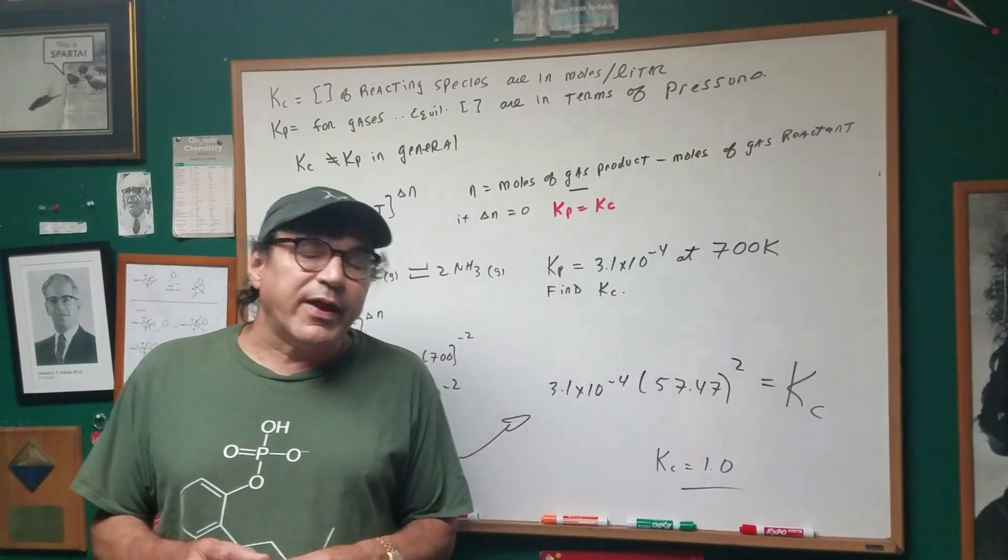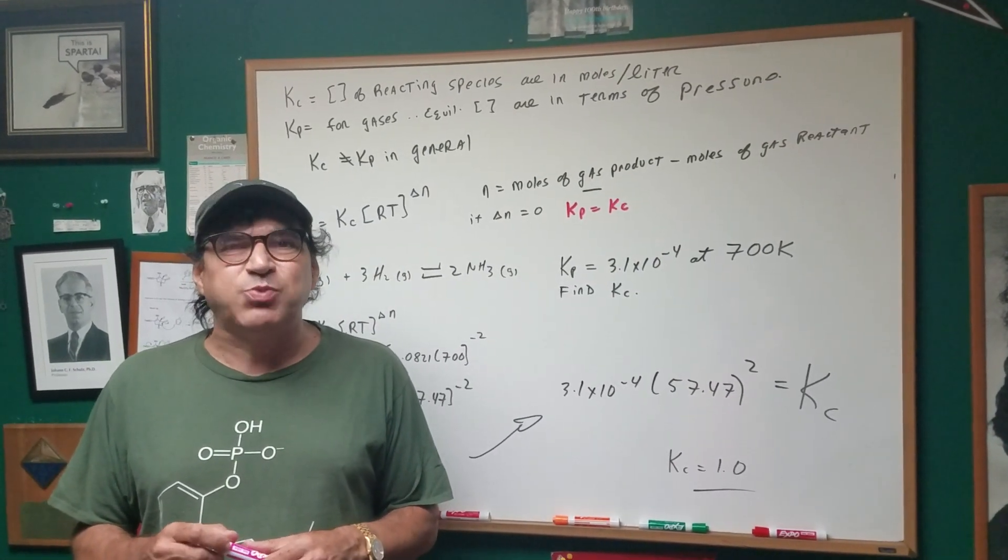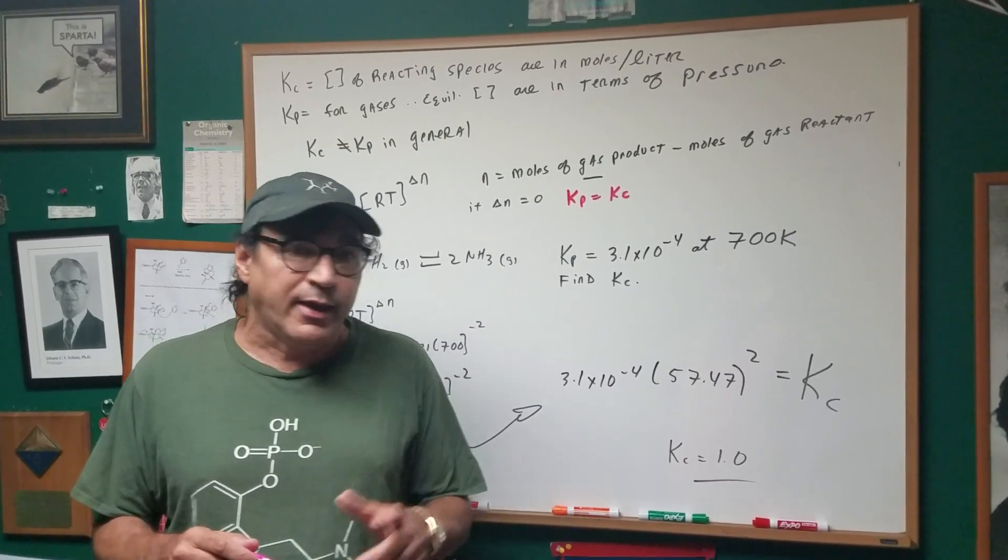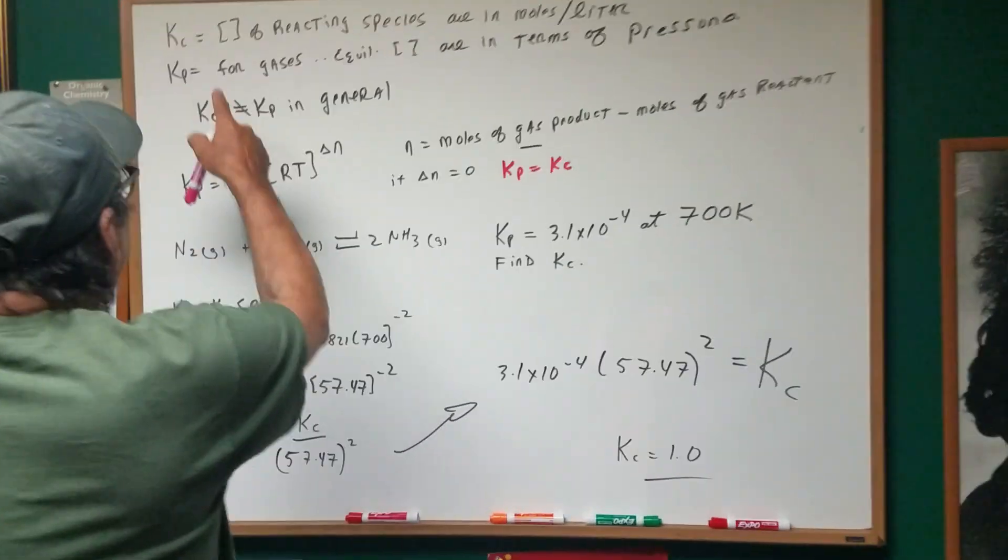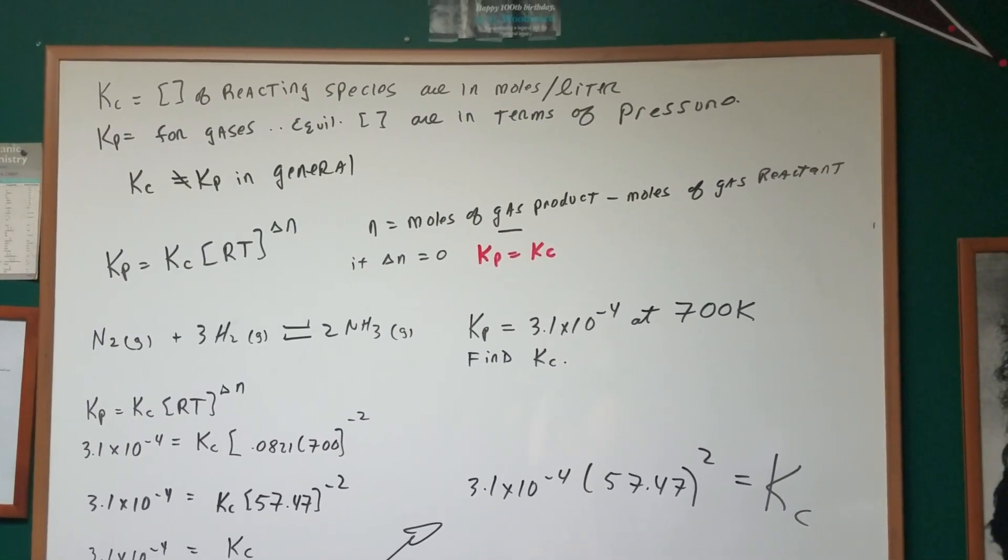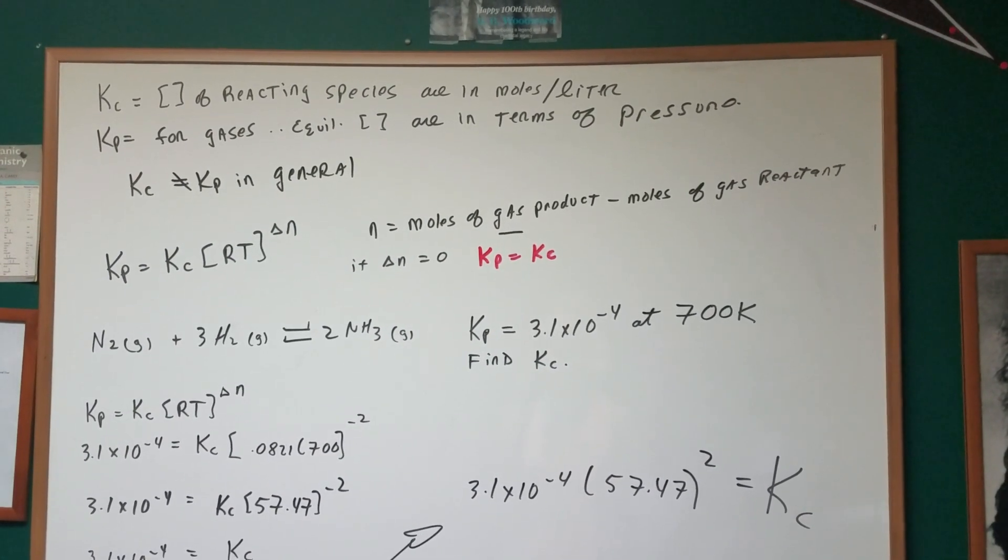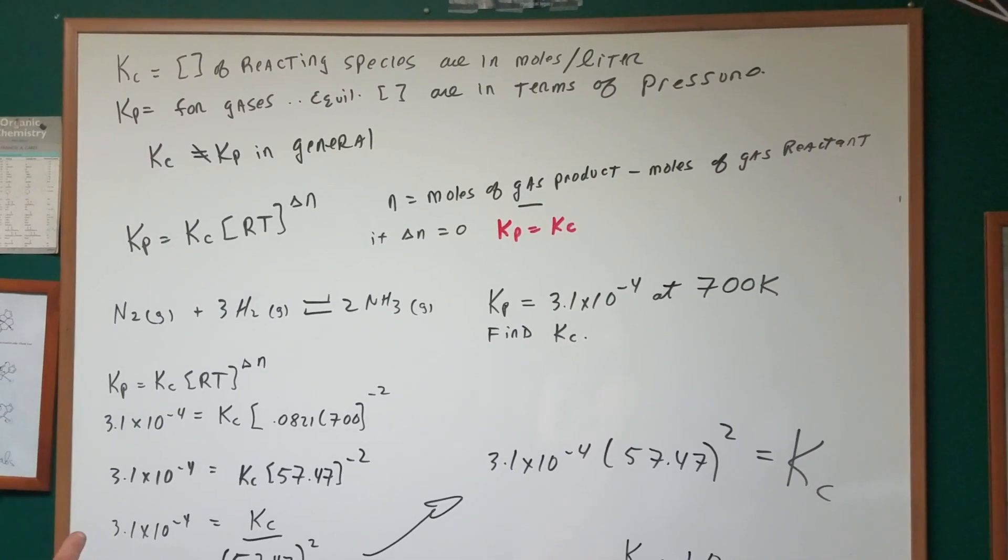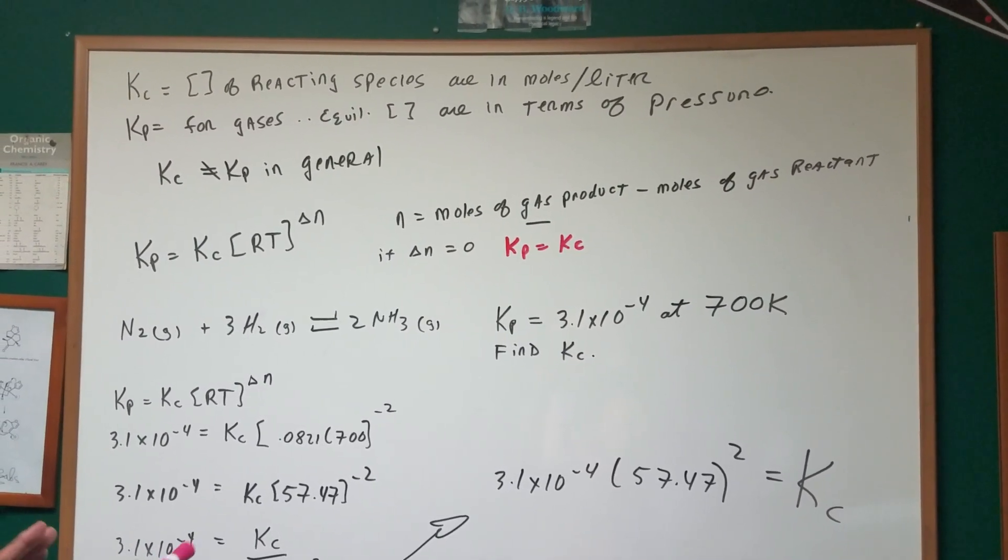The equilibrium constant can be expressed as what we call the KC or the KP. Let's have a look. The KC, you might see it sometimes as KEQ, represents the equilibrium concentration of reacting species when everything is in moles per liter.